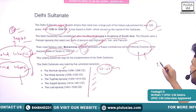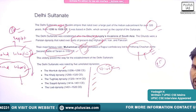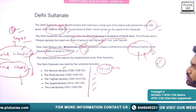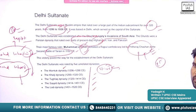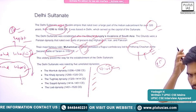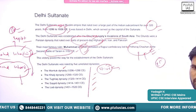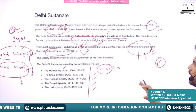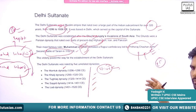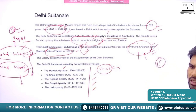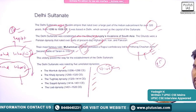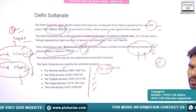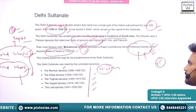The Rajput confederacy led by Prithviraj Chauhan at the second battle of Tarain — Muhammad Ghori was able to defeat that confederacy. Only a few Rajputs had joined Prithviraj Chauhan. He was defeated in the second battle of Tarain. In the first battle of Tarain, Prithviraj Chauhan had defeated Muhammad Ghori. When he came the second time, he declared the war as a holy war, motivated his soldiers, and we also see weakness in the Indian defenses.